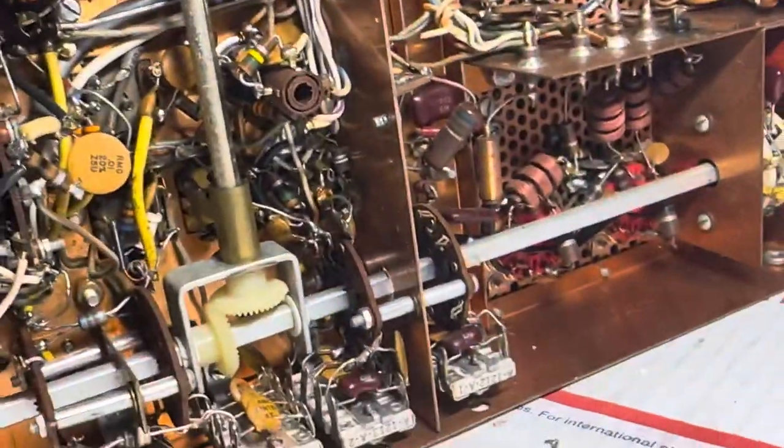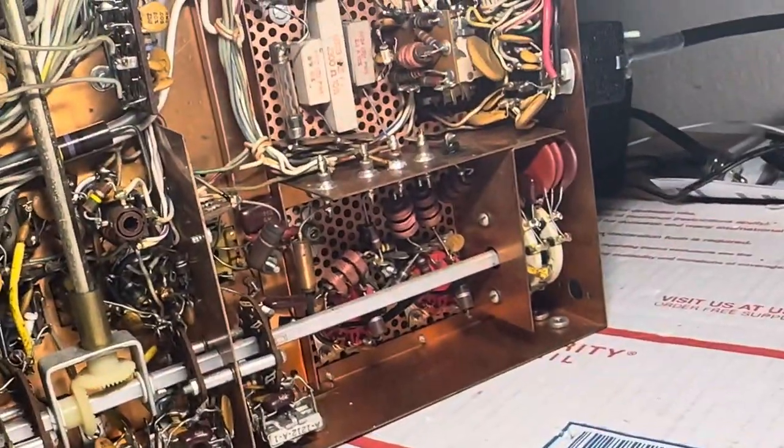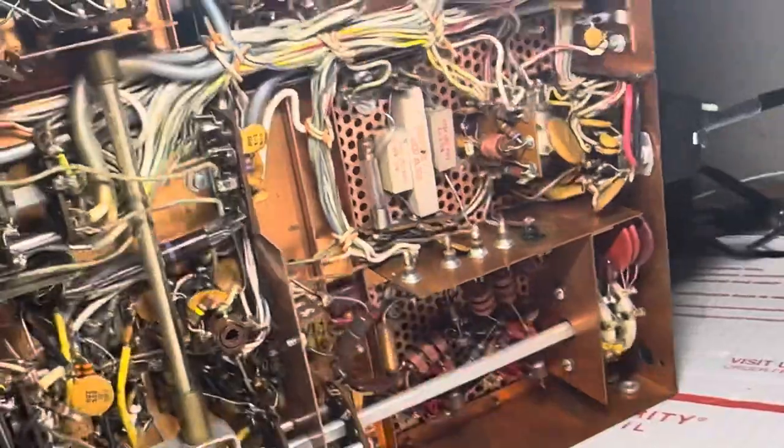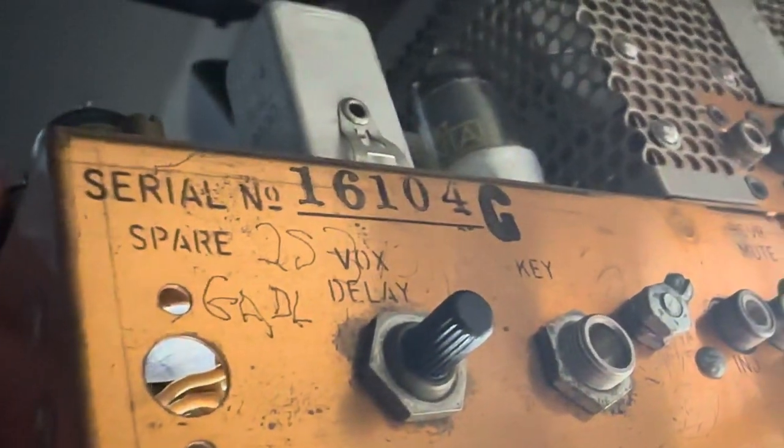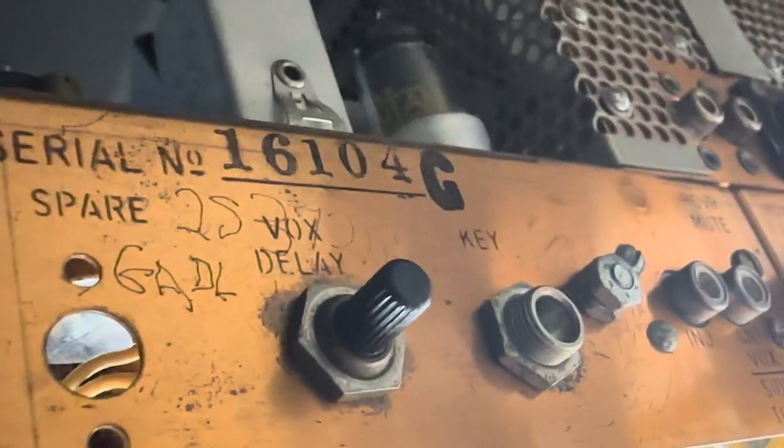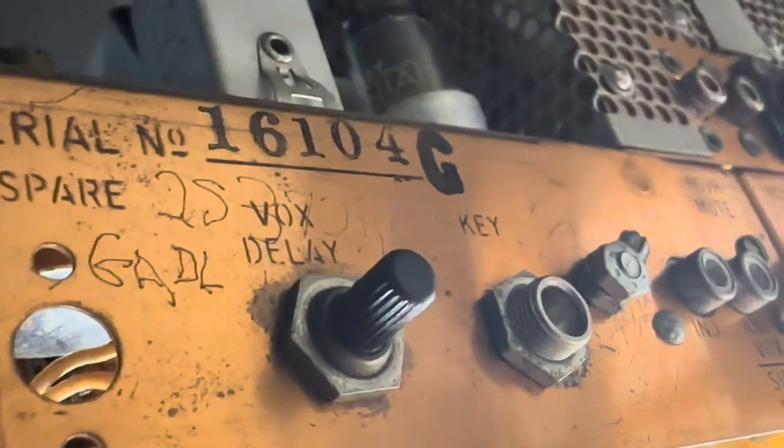And what else is a problem with these is the sideband filter. So on these earlier ones, let's see, how early is this thing? This is a spare something. I don't know what that means. Okay, so 680L.